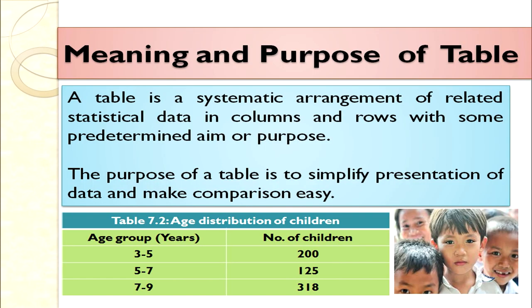Let us discuss the meaning and purpose of a table. A table is a systematic arrangement of related statistical data in rows and columns with some predetermined aim or purpose. The purpose of a table is to simplify presentation of data and make comparison easy. From a table we can see age groups and how many children are in a particular age group, simplifying the presentation and making comparison easy.